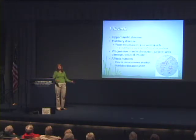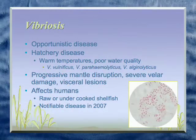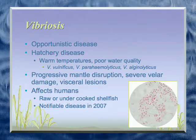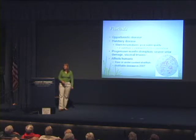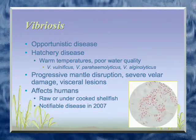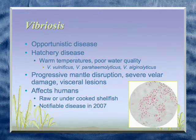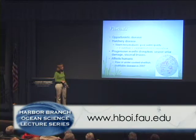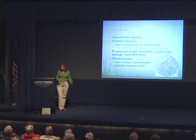Now we're going to move from parasites to bacteria and talk a little bit about Vibrio. Anybody that works with marine species — whether it's fish, clams, oysters, or shrimp — will run into problems with Vibrio. Vibrio is always in the water column. It's an opportunistic disease, a secondary pathogen, and it comes out when animals are stressed and have a poor immune system. We consider it a hatchery disease in aquaculture. When it becomes a problem for humans, it's because filter feeders concentrate the bacteria, and if you eat undercooked or raw seafood you can have health problems. This became a notifiable disease according to the CDC in 2007 because of the rise of this disease, and they wanted to keep better track of it.